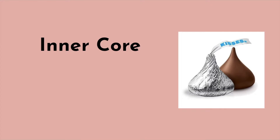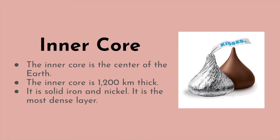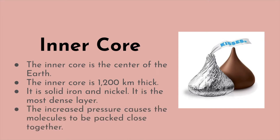We're going to start at the center of the Earth with the inner core. The inner core is represented by a Hershey Kiss because a Hershey Kiss is a solid, and the inner core is a solid. The inner core is the center of the Earth, 1,200 kilometers thick. It is solid iron and nickel and it is the most dense layer. The increased pressure causes the molecules to be packed close together, making it solidify into a solid.